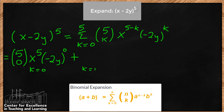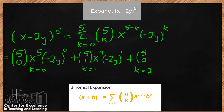Moving on to k=1: we have 5 choose 1, x to the 4th power — since it's 5 minus k, so x goes down by 1 — and then negative 2y to the 1st power. For k=2: we have 5 choose 2, x to the 5 minus 2, which is 3, and then negative 2y squared. Notice the powers on the x's are always decreasing by 1 — 5, 4, 3 — and the powers on the negative 2y's are always increasing by 1 — 0, 1, 2.